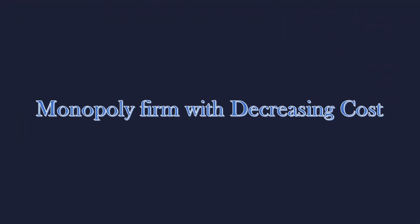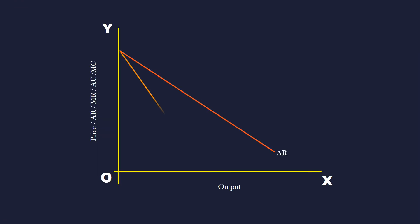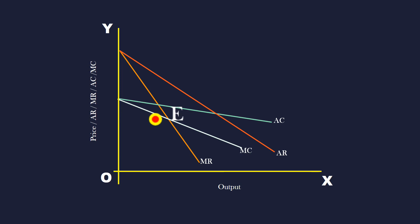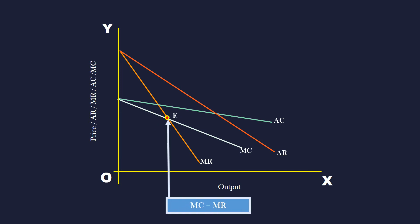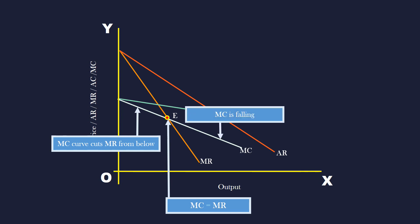Monopoly Firm with Decreasing Cost. AR and MR are respectively the average revenue and marginal revenue curves. Since the firm enjoys decreasing cost in production, its average cost curve AC falls, and its matching MC curve lies below it. The firm is in equilibrium at E, where its marginal cost is equal to marginal revenue. The marginal cost curve cuts the marginal revenue curve from below, but marginal cost is falling, not increasing.